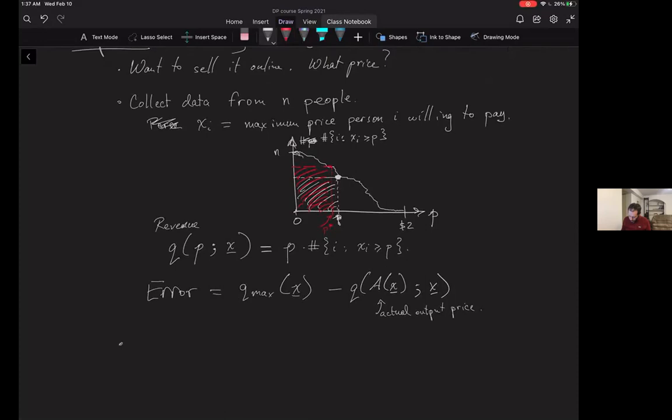Again, we're going to assume we want to do this differentially privately. We can't necessarily produce the best outcome. Maybe the best point was here, that's P star, but we're going to make a little bit less money than that with this price P. In this kind of setting, adding noise might make no sense at all. Adding noise doesn't really make sense.